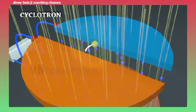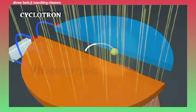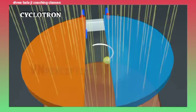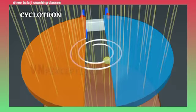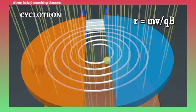The charged particle now moves perpendicular to the direction of the magnetic field. It experiences a force in a direction perpendicular to the plane containing V and B. This force provides the centripetal force and makes the charged particle move along a circular path of radius R equals MV upon Q times B.